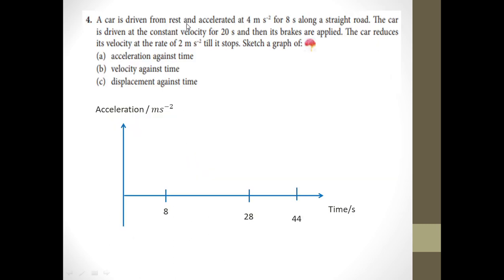The car is driven from rest and accelerates at 4 meters per second squared for 8 seconds along a straight route. Then the car is driven at constant velocity for 20 seconds, and brakes are applied so the car reduces velocity at the rate of 2 meters per second squared until it stops. The question asks you to sketch the acceleration-time graph, velocity-time graph, and displacement-time graph. Based on the information given, we highlight the important keywords.